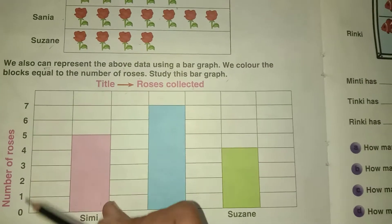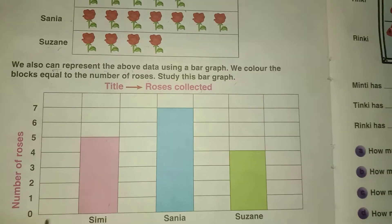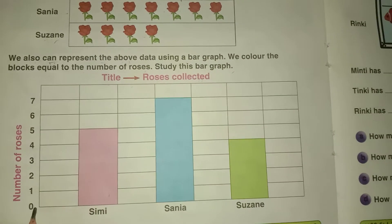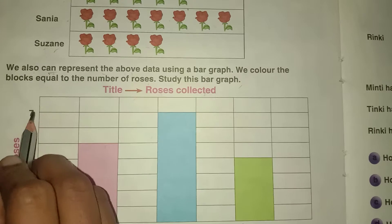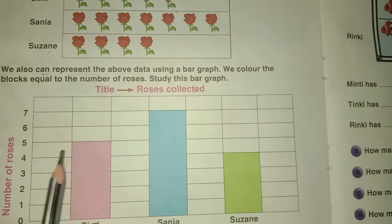Here number of roses you have to write 0, 1, 2, 3, 4, 5, 6, 7. You have to start from 0.